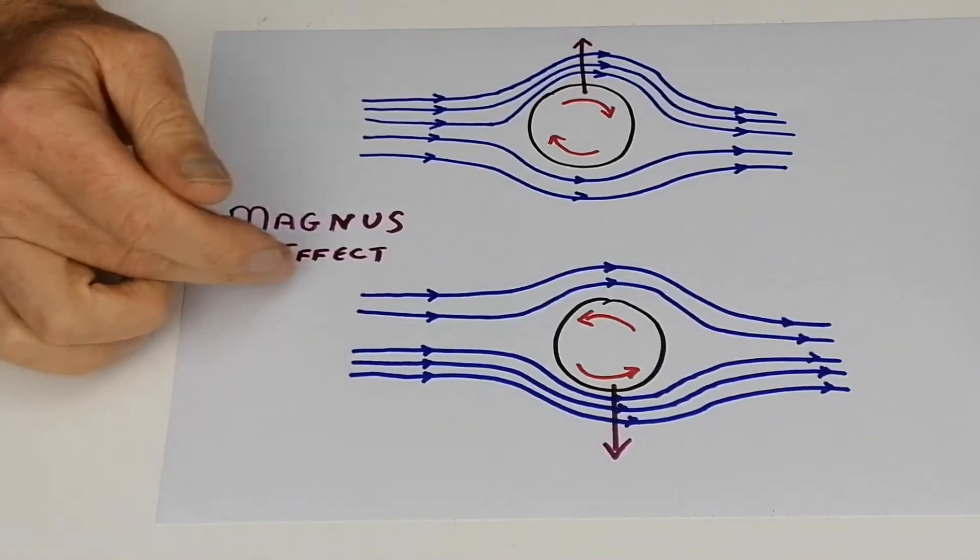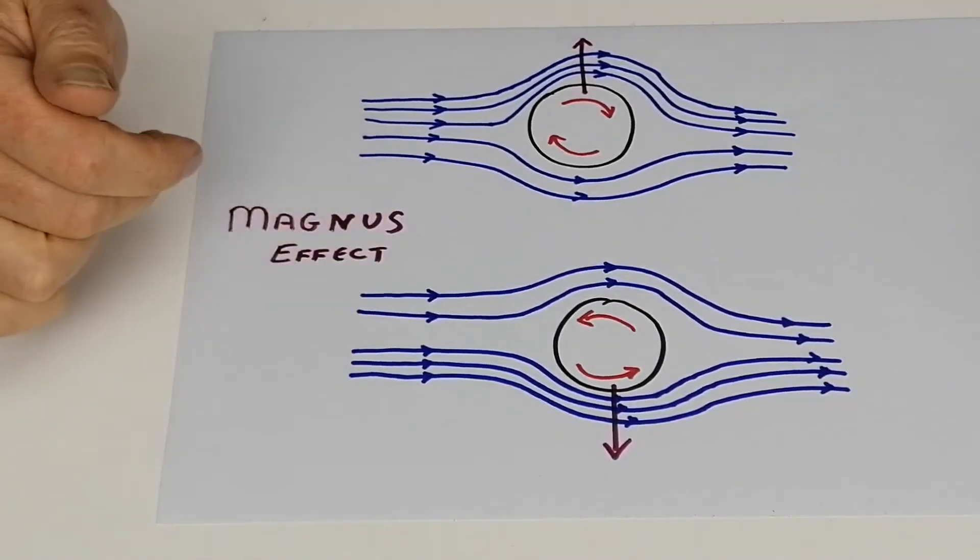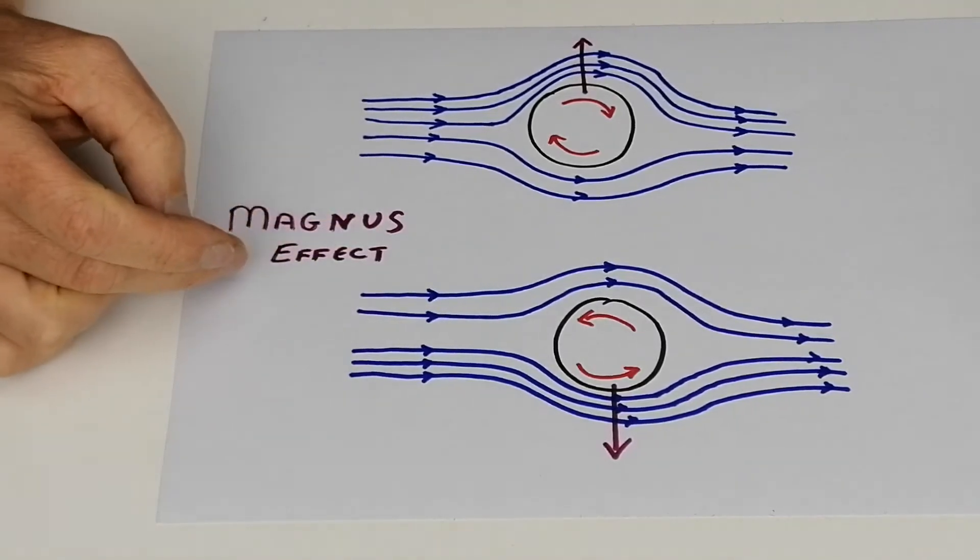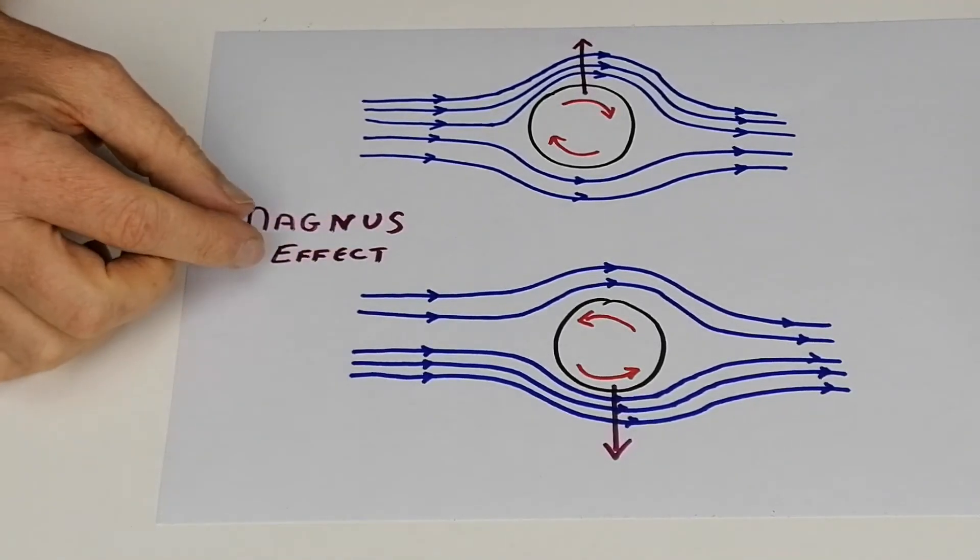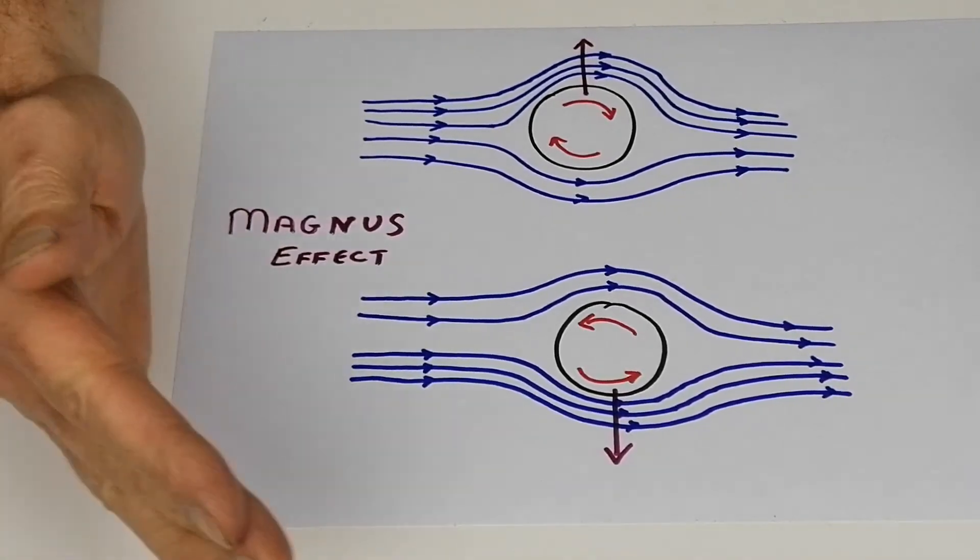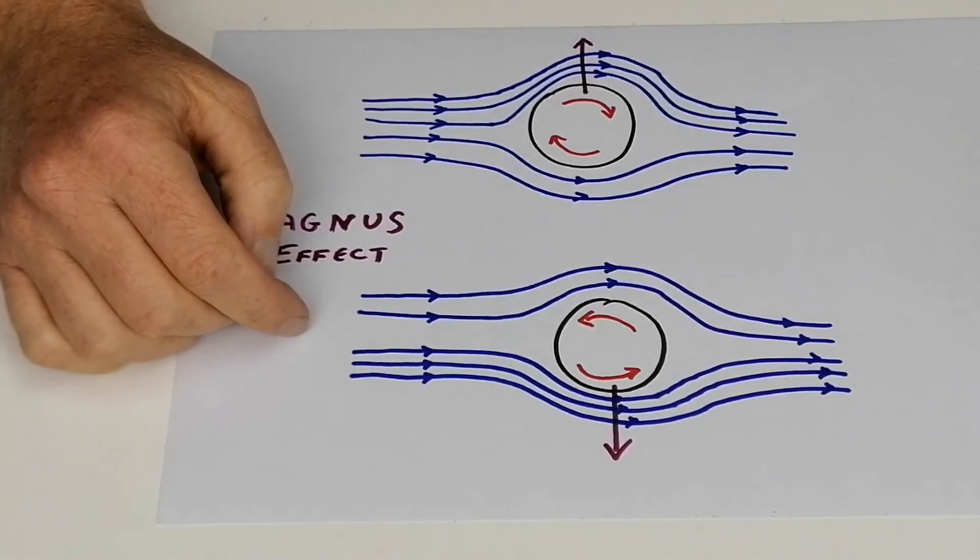The actual scientific name for this is called the Magnus effect, named after a scientist called Magnus. If you want to look that up, there are some nice videos that explain this in different ways. There's also the reason why a soccer ball when you give it a spin can actually curve the ball.